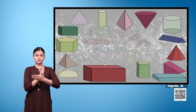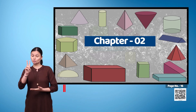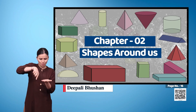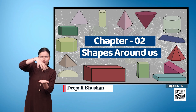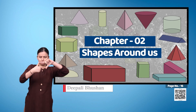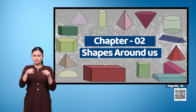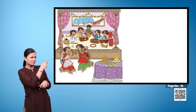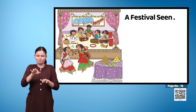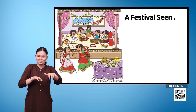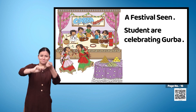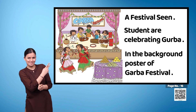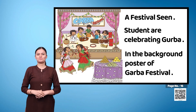Page 16, Chapter 2: Shapes Around Us. On the page here, we can see a festival scene. Students are celebrating Garba. In the background, we can see a poster reading 'Garba Festival.'